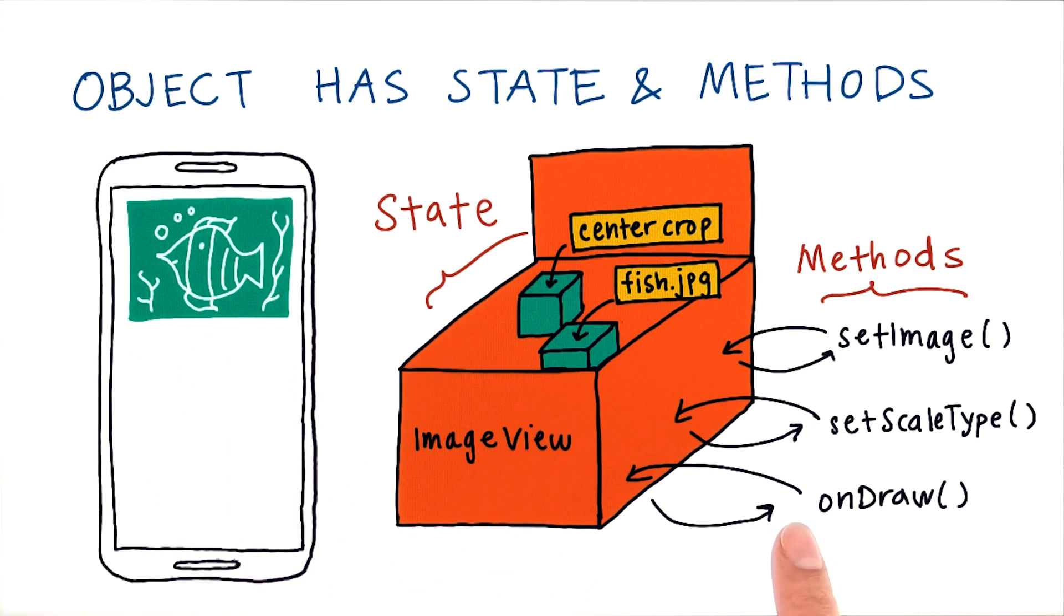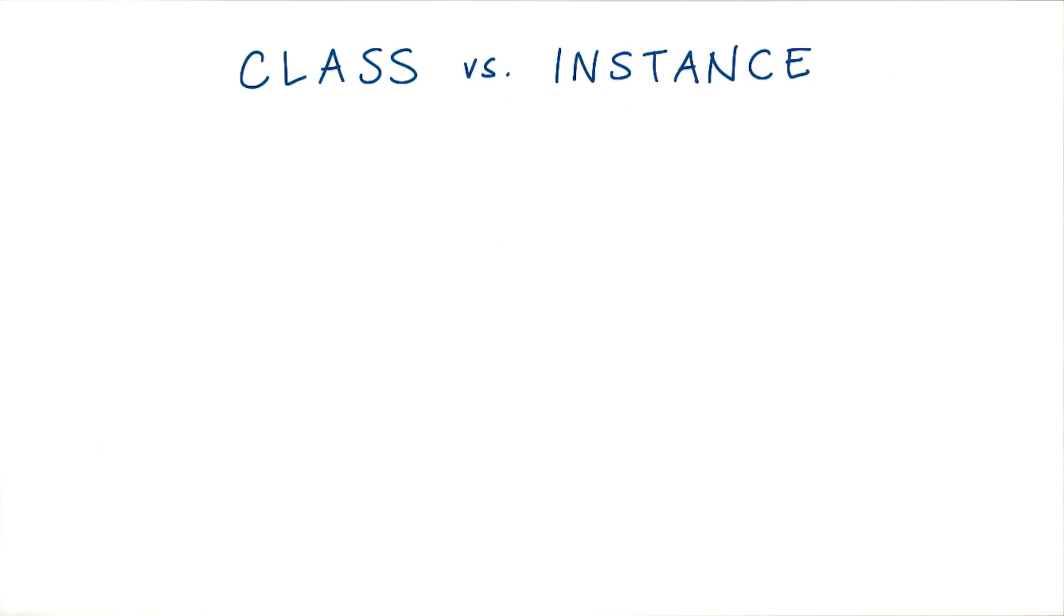Note that as developers, we don't explicitly have to call onDraw to tell it to draw onto the screen. Android handles calling this automatically for us. But it is useful to be able to call these methods to change the image view, for example. So how do we know what all the fields are inside the state of an image view, and what all the methods are of this image view? To answer that question, we have to look at the class definition for that object.